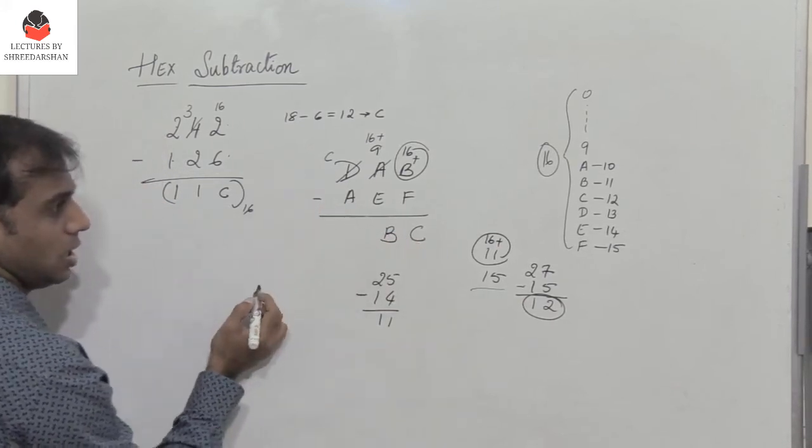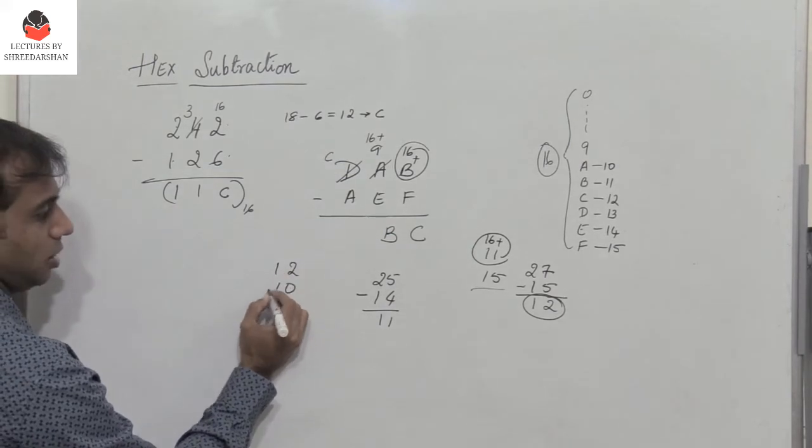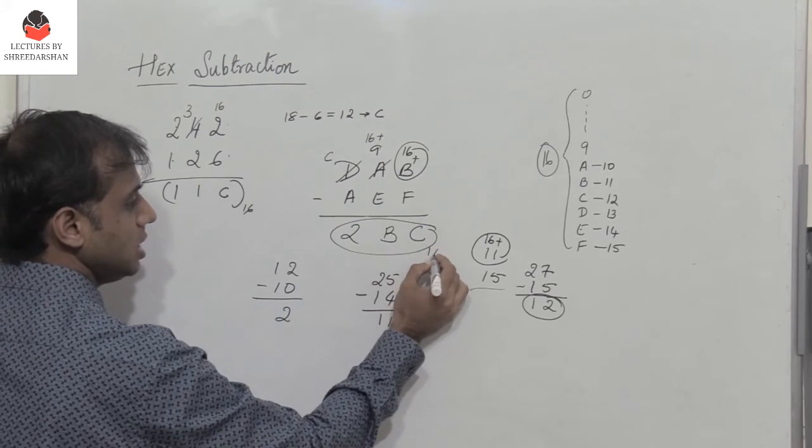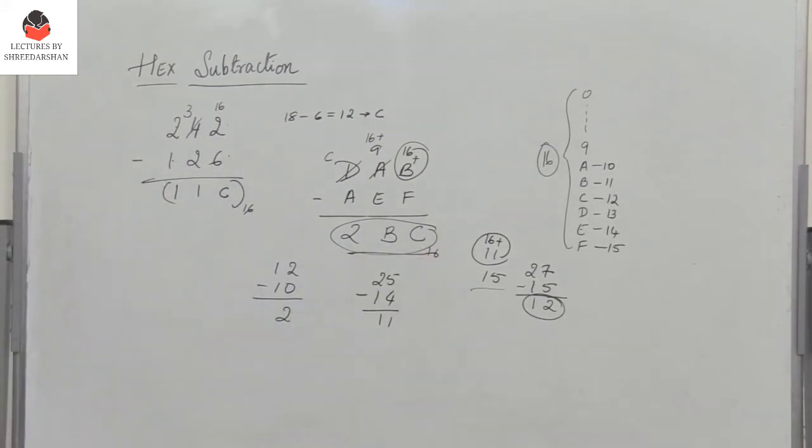C minus A: C is 12, A is 10, so I have 2. 2BC is the answer. When I subtract DAB minus AEF, I get 2BC as the answer.